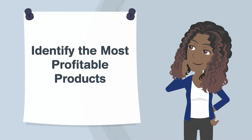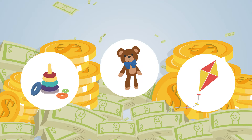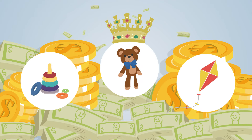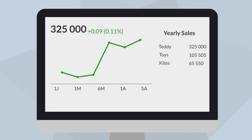Identify the most profitable products. According to this principle, 20% of your products generate 80% of your profits. Take the time to inventory them and determine which ones are the most profitable.